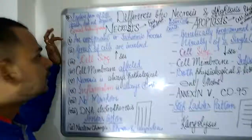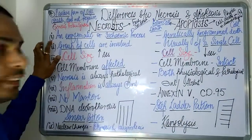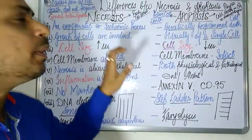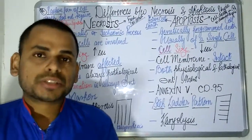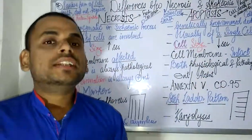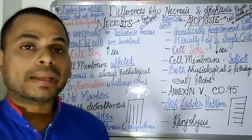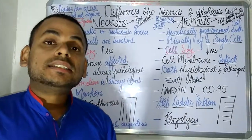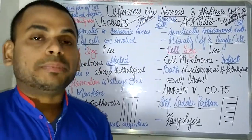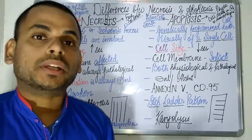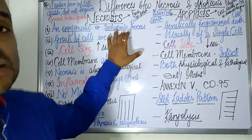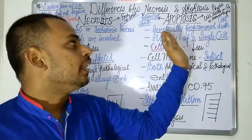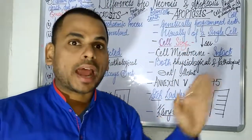Necrosis is an enzymatic or ischemic process. Ischemia is a reduced blood supply to an organ — whenever there is an altered or reduced blood supply to a particular organ, the cells die due to ischemia. So cell death occurring due to reduced blood supply is necrosis, whereas apoptosis is a genetically programmed cell death.